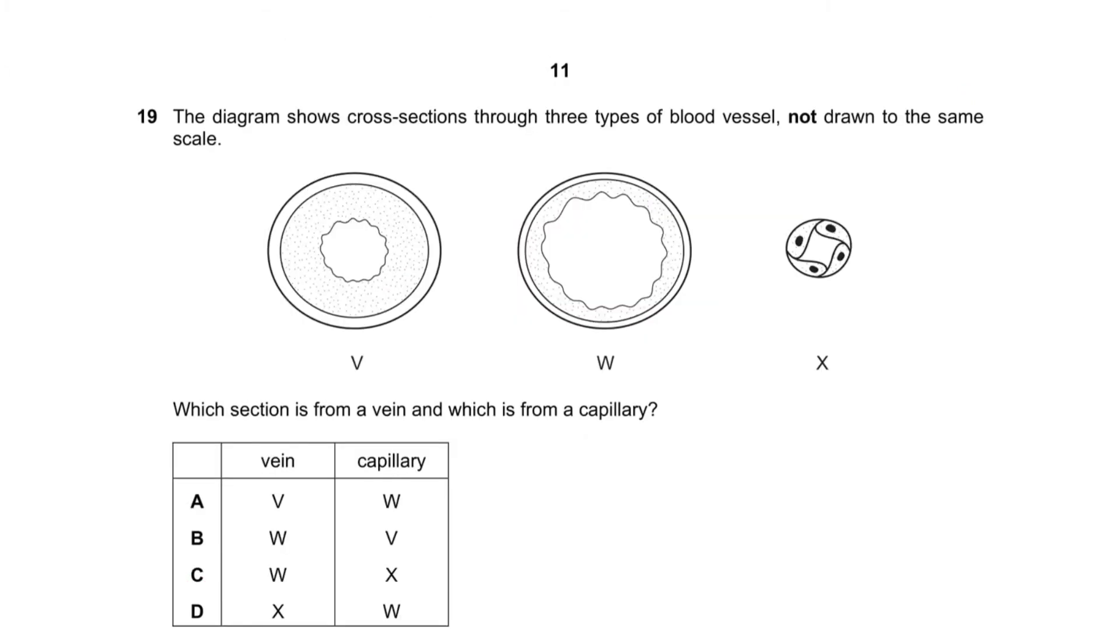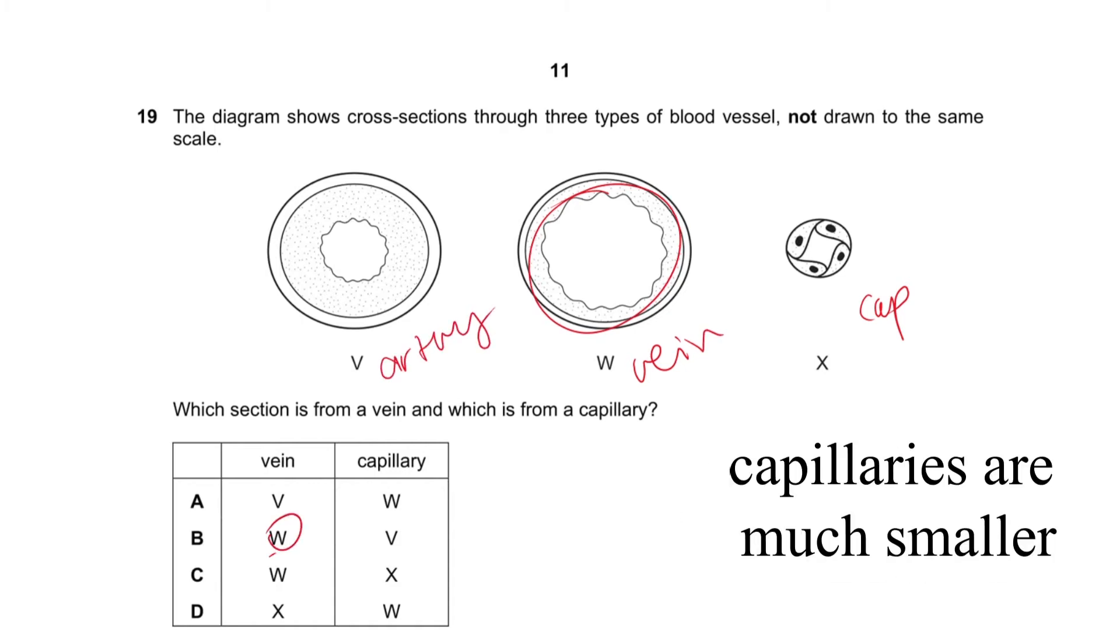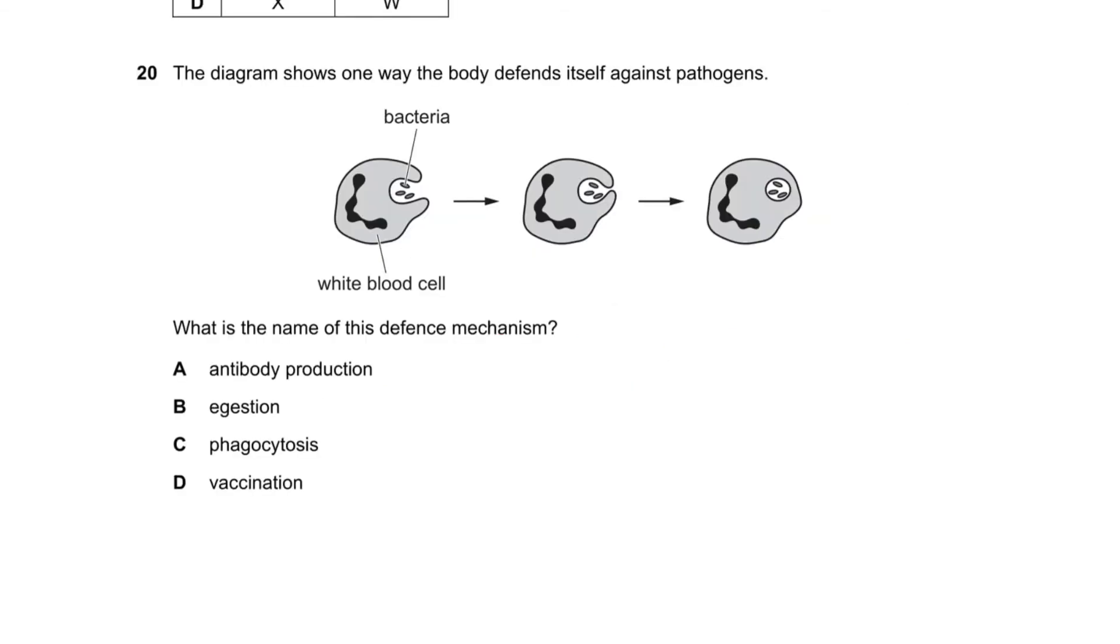Question 19: this is a capillary because it's small, it sounds very big loose. Just a vein, that's an artery, so vein is W, artery is X. Question 20: what's the name? Phagocytosis. We already know it's eating. It wraps these little arm-like structures around it and then it digests it and excretes it out.